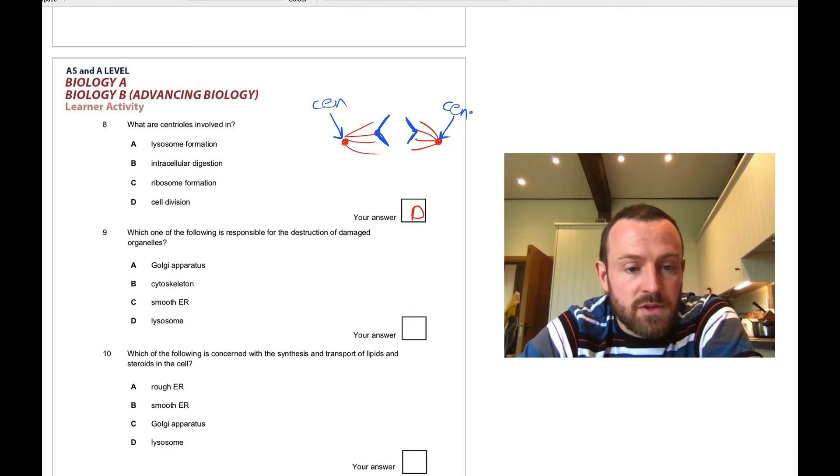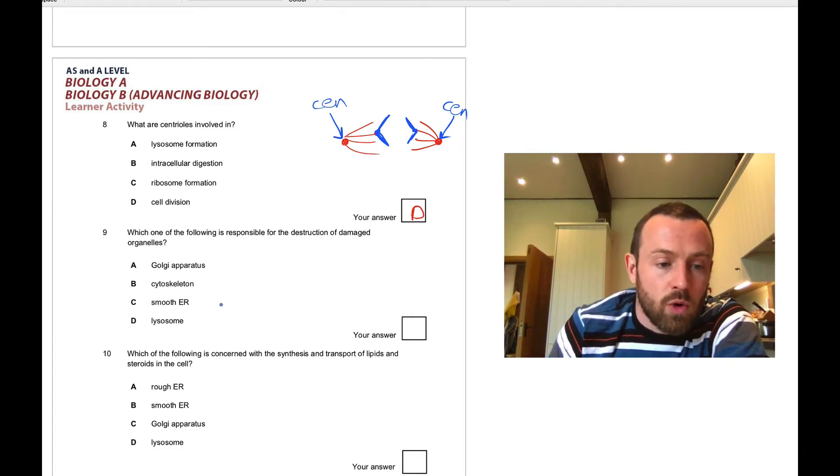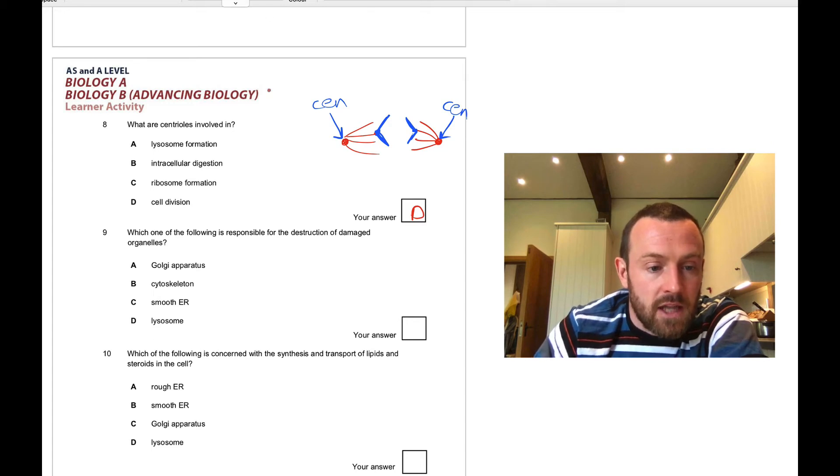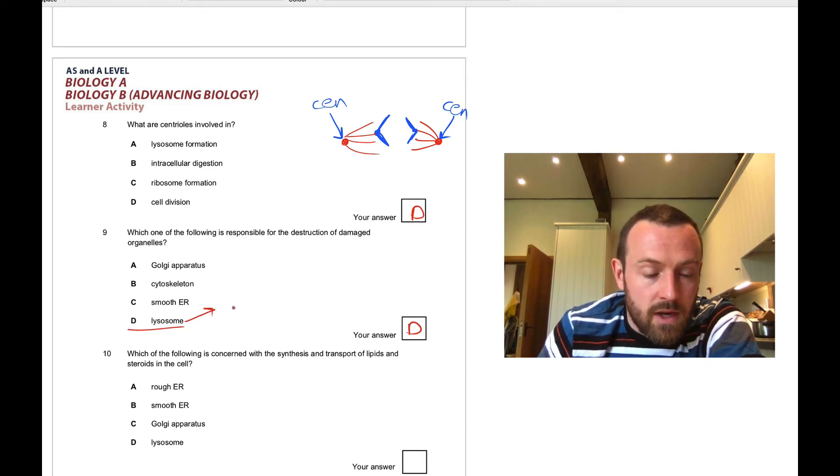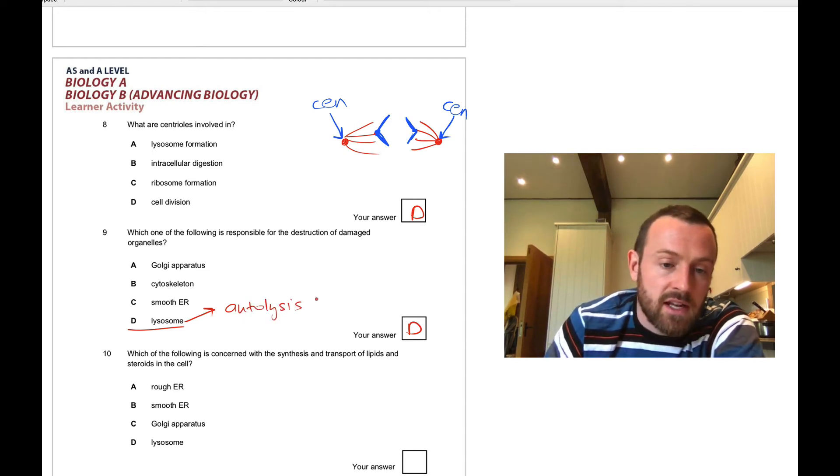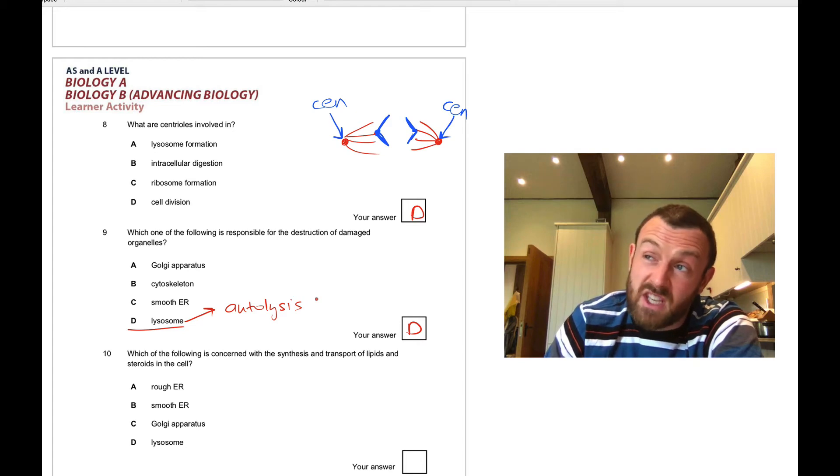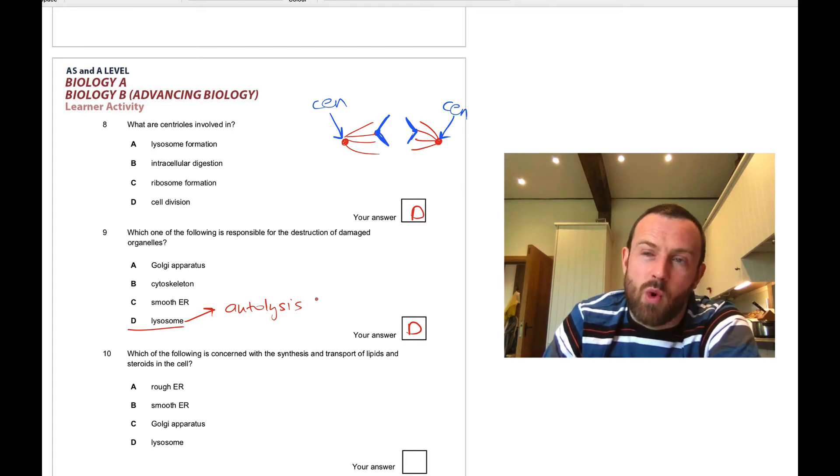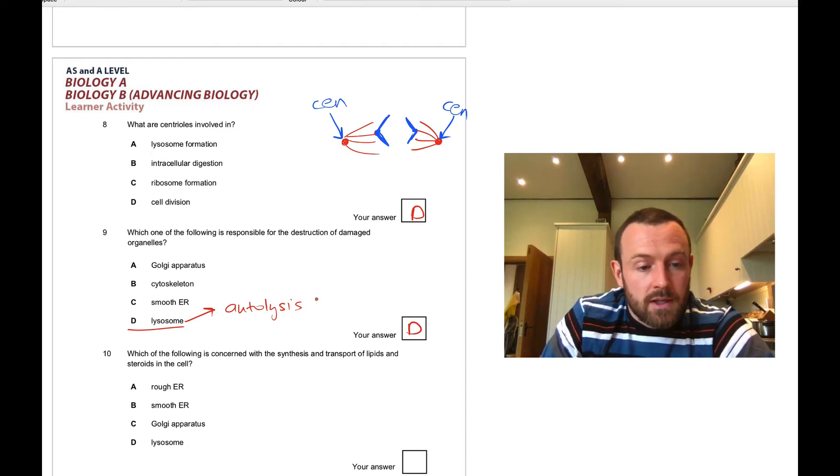Question nine: which of the following is responsible for the destruction of damaged organelles? This one is the lysosome. Remember I said that the lysosome has a role in autolysis, which is kind of recycling of proteins and things that are worn out a bit and need to be renewed.